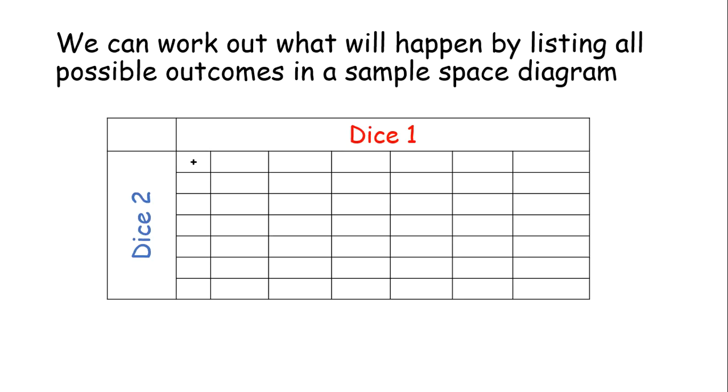So, this is just basically a table. And it will have a list of everything that could happen. And this will allow us to put some numbers and probabilities to those outcomes. So, you can see here in my heading, I've got dice number one up here. And I've got dice number two on the side in blue. Both dice had a possible of six numbers, one to six on them.